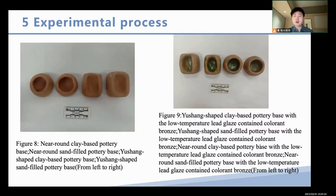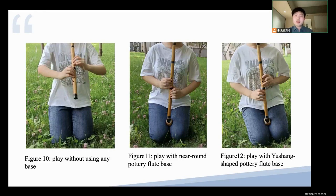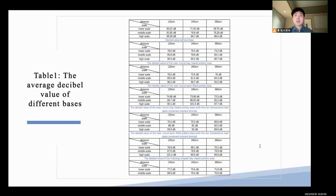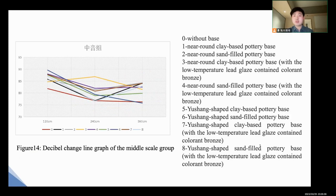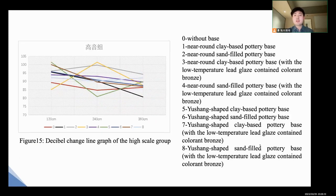There are bases of shell made from different materials reconstructed experimentally. There are photos of volunteers playing shell in experiment 2: play without using any bases, play with a nearly-round pottery flute base, and play with an oval-shaped pottery flute base. Here is a table of the average decibel values of the different bases, and this is the sound intensity measurement result of the lower scale group, the medium scale group, and the high scale group.